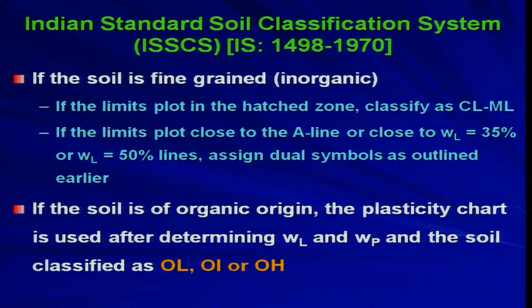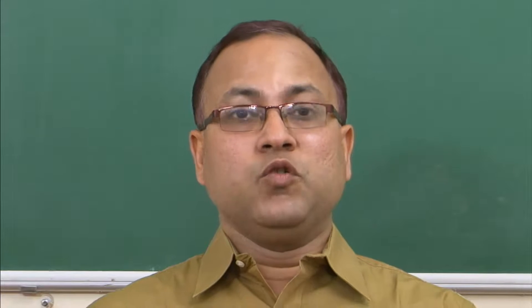If the soil is of organic origin, the plasticity chart is used after determining liquid limit and plastic limit. If it is low plastic organic soil it is OL; if intermediate plastic it is OI; if high plastic it is OH. Perform the liquid limit and plastic limit tests, find the plasticity index, go to the IS plasticity chart, and classify as OL, OI, or OH based on whether the liquid limit is below 35, between 35 and 50, or above 50 percent.